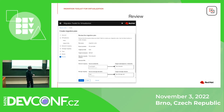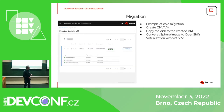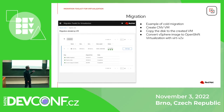At the end of creating the plan, we have a review of what we are doing — that we have selected just one VM, where, what, from, and so on. It created the migration plan. Now we can start it, and the migration itself creates an empty VM inside CNV and starts moving the data from the provider to CNV.